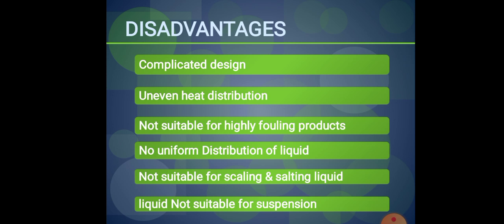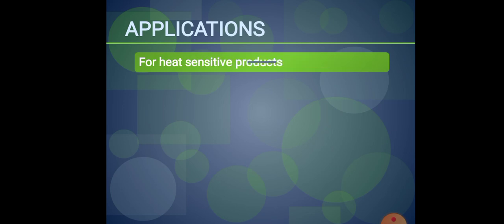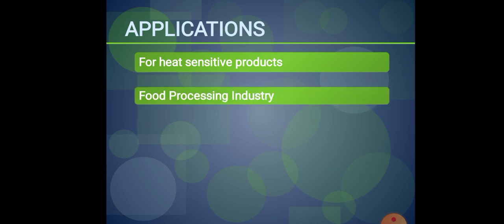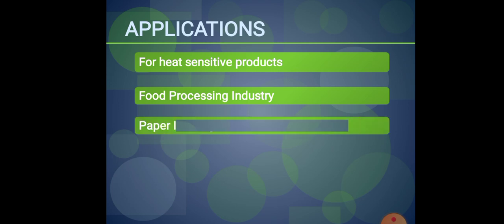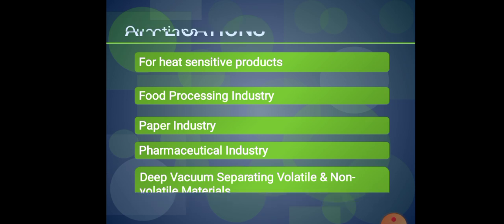Applications of the falling film evaporator: first, it is useful for heat sensitive products. Second, it is used in food processing industries. Third, it is used in paper industries and pharmaceutical industries. Fourth, it is used for the separation of volatile and non-volatile materials using deep vacuum.